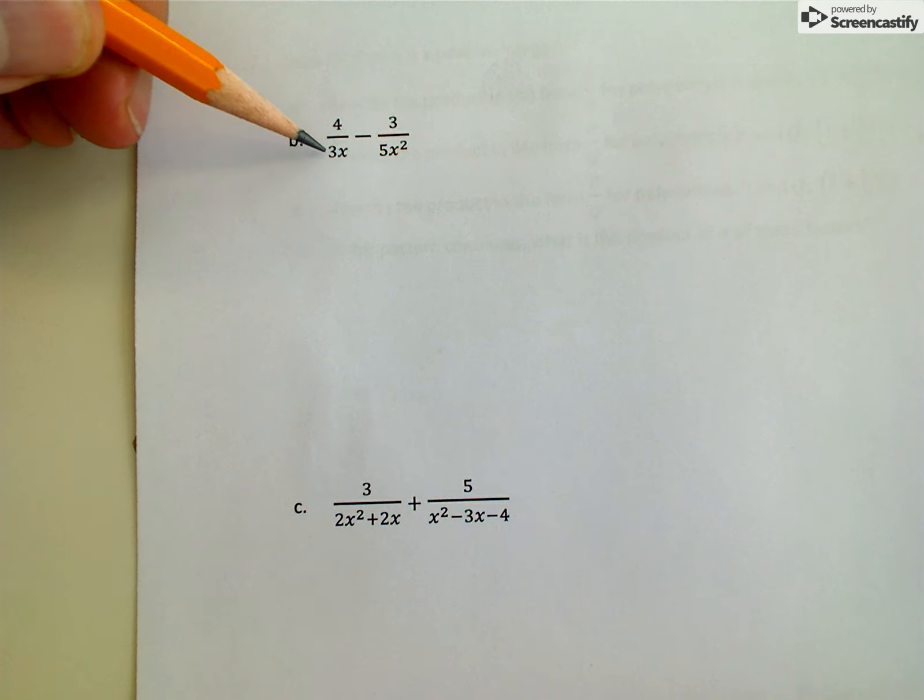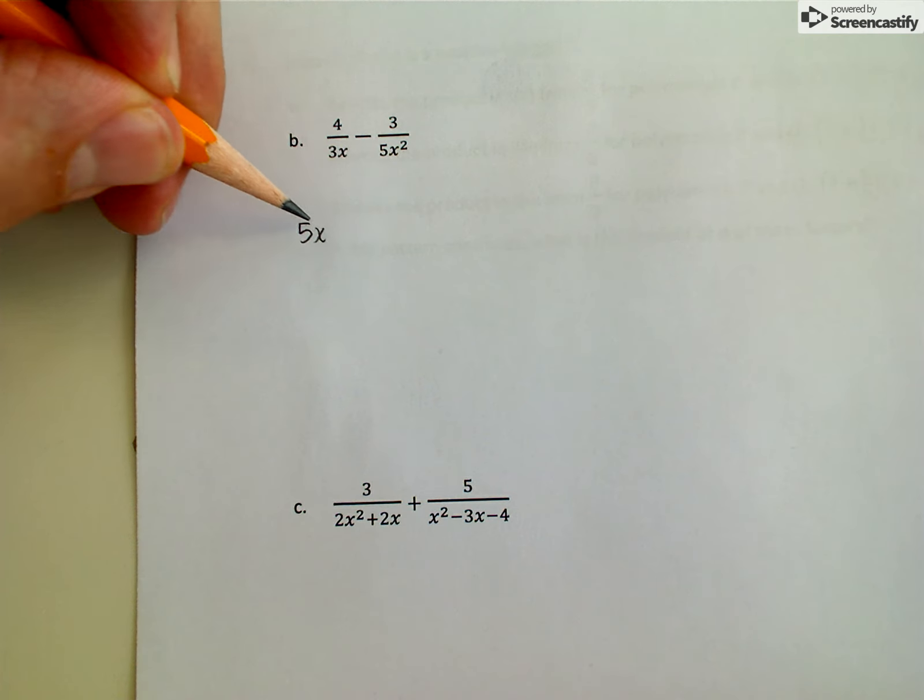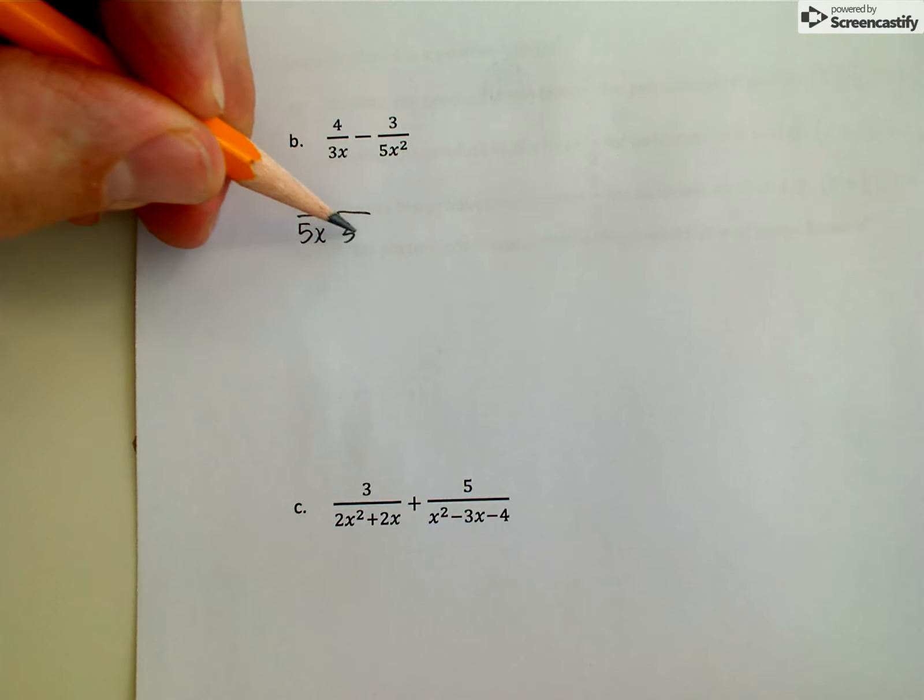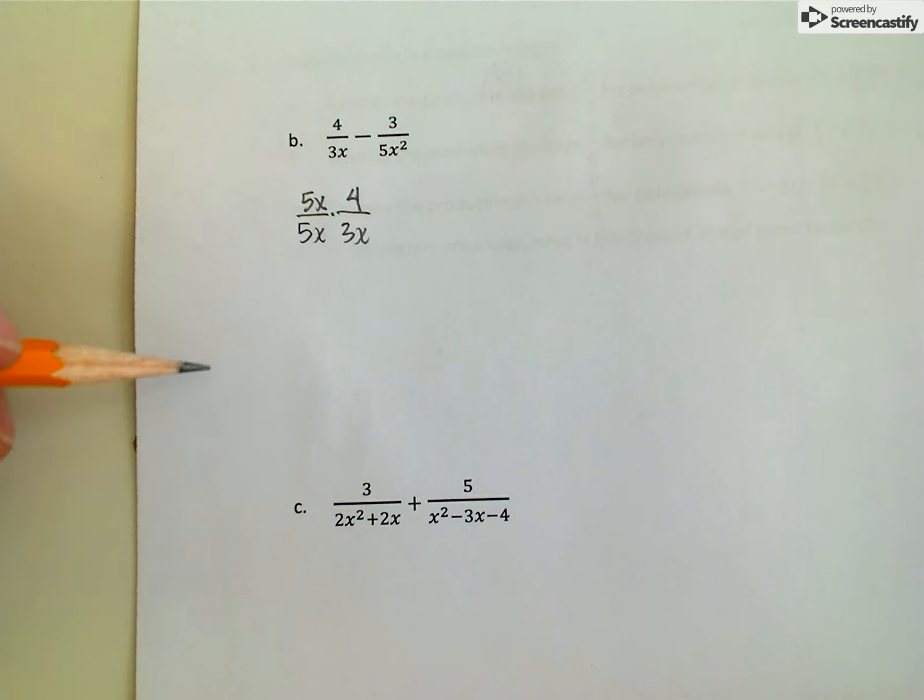Well, I can just multiply this by x in order to make an x squared, but I also don't have a 5 as one of my factors down here. So I'm going to multiply the bottom of this rational expression by 5x. And that would give me 15x squared. Of course, I also need to multiply the top by 5x.